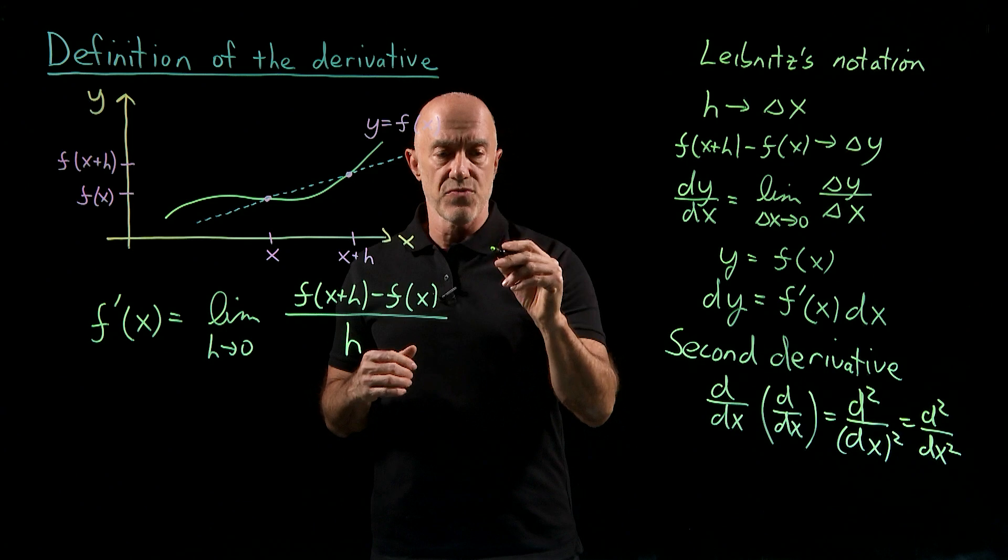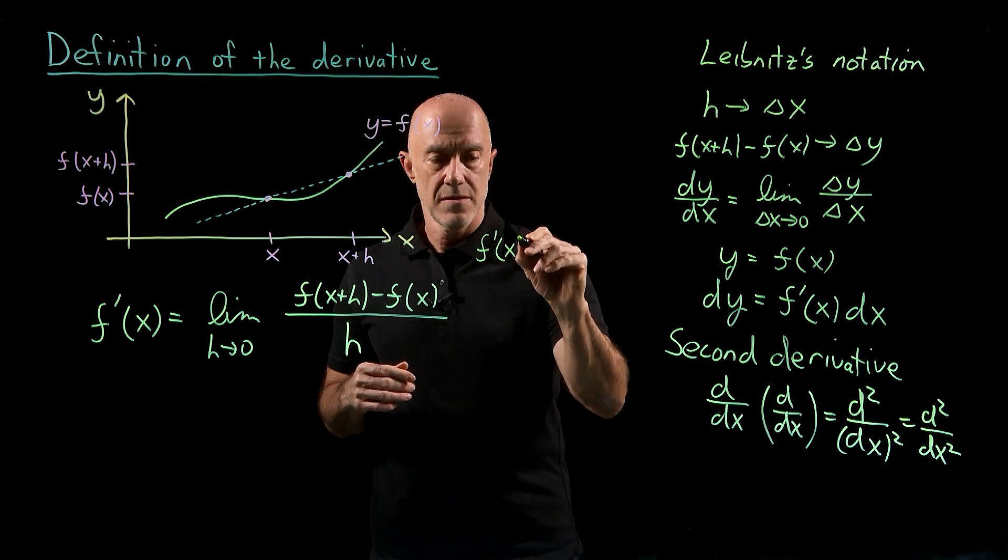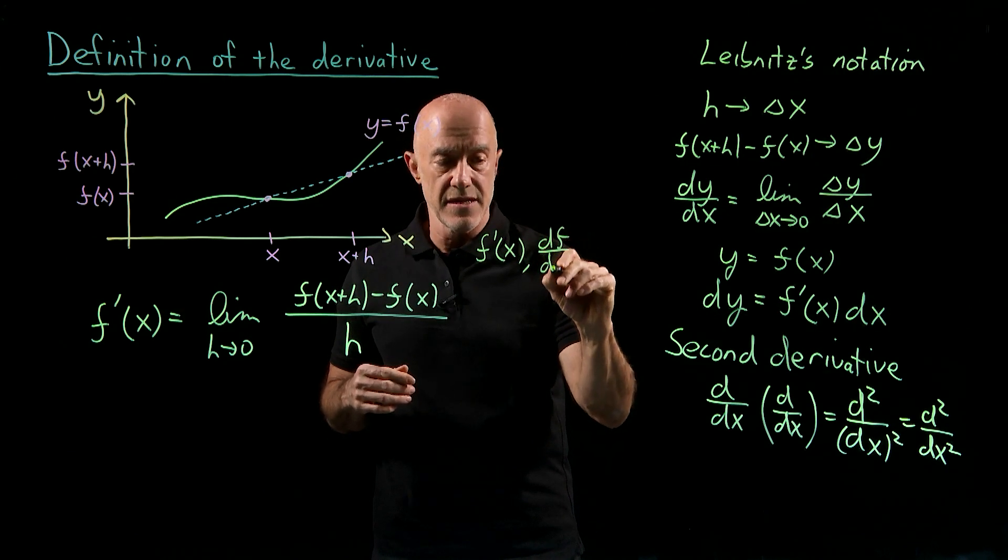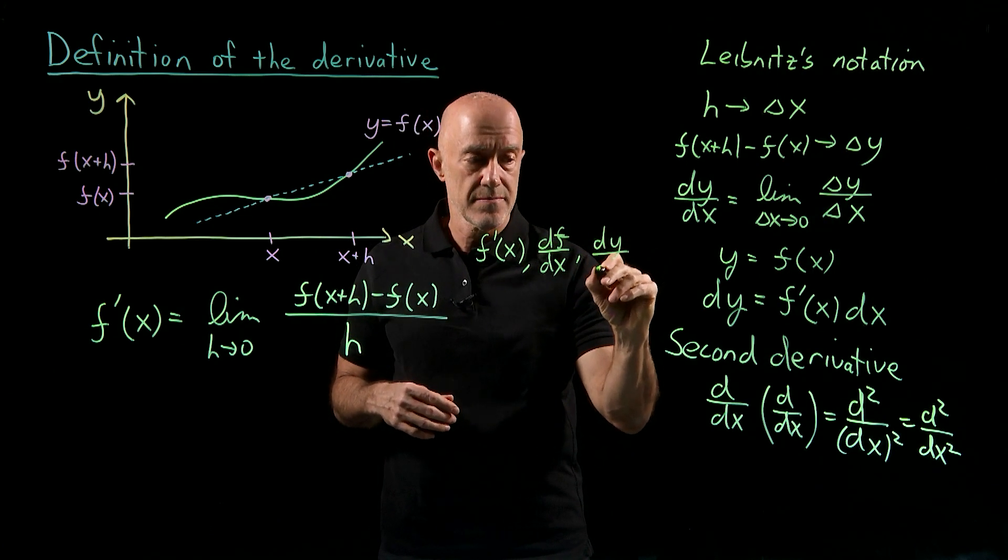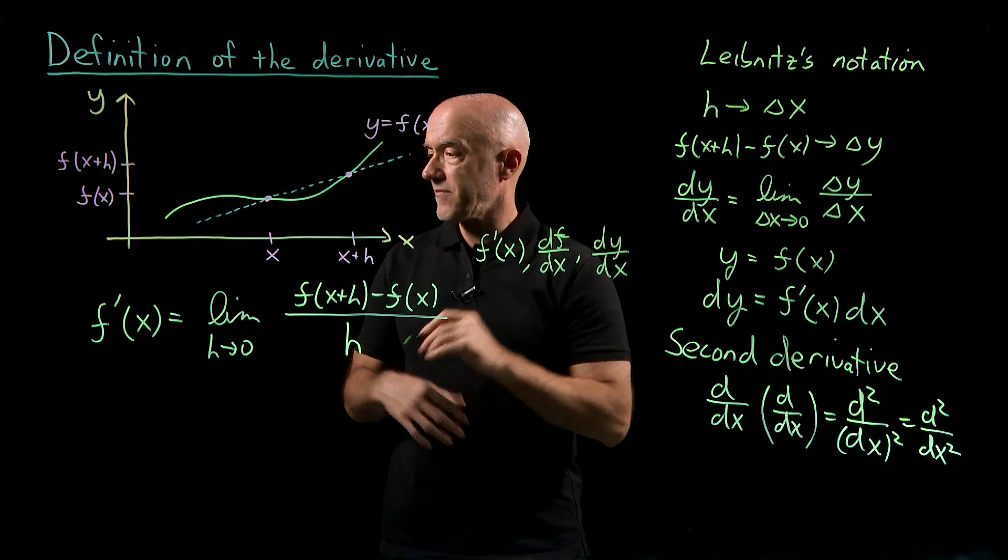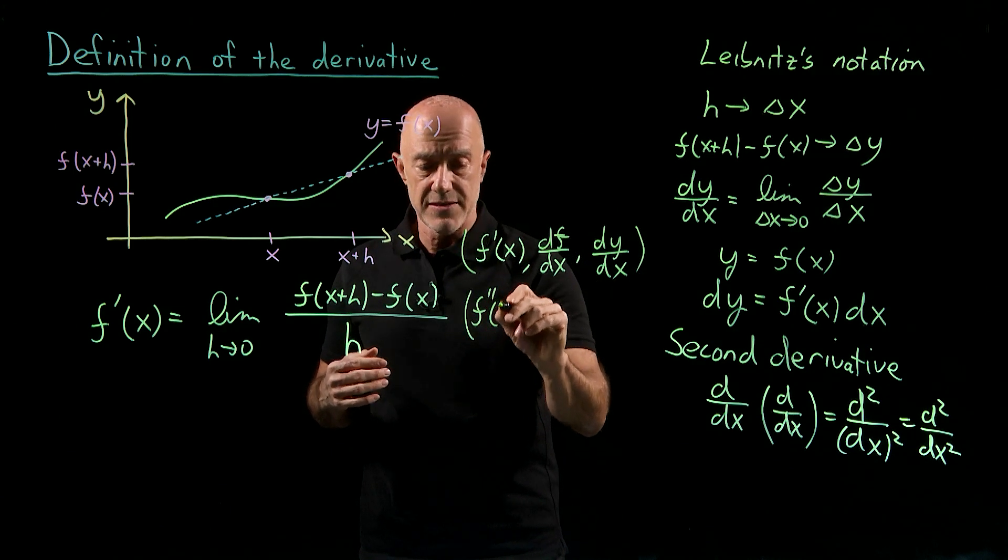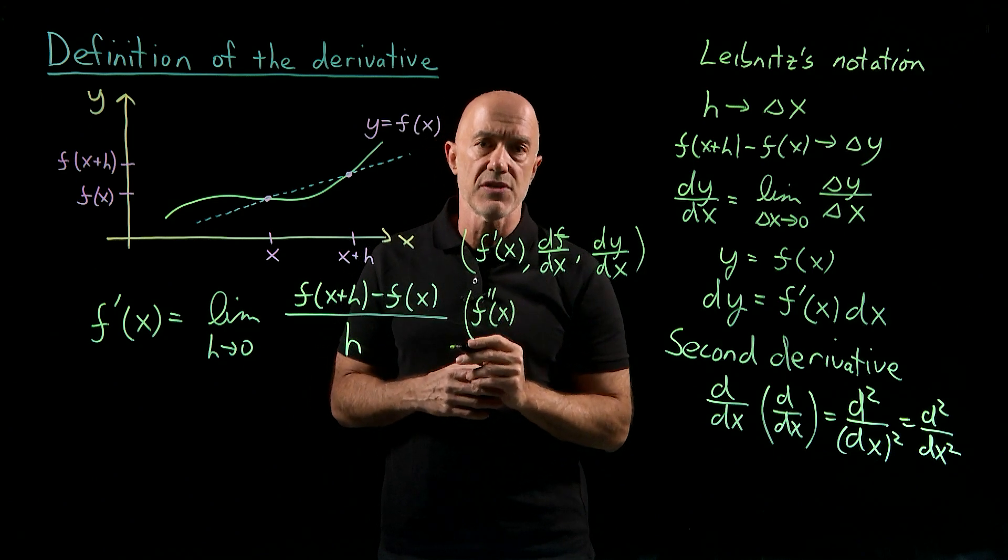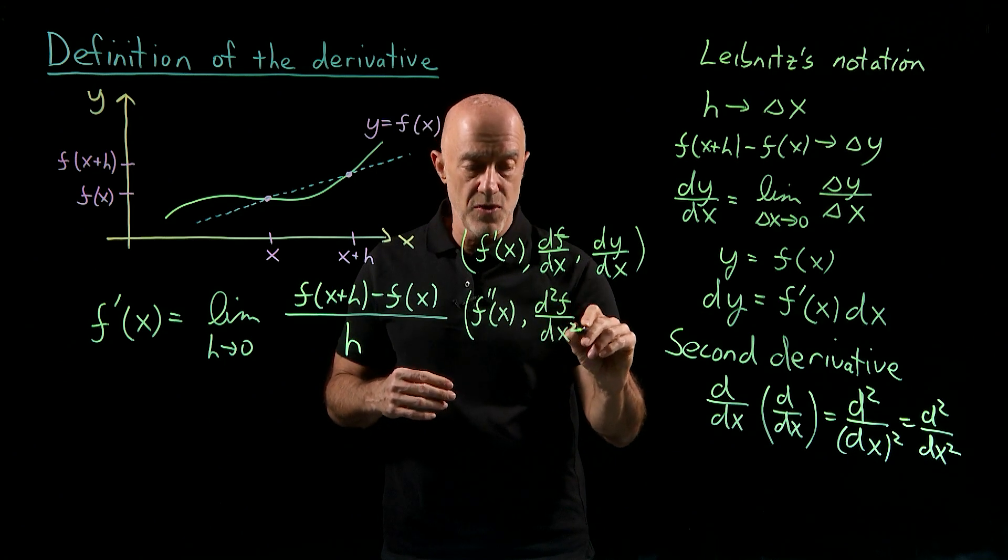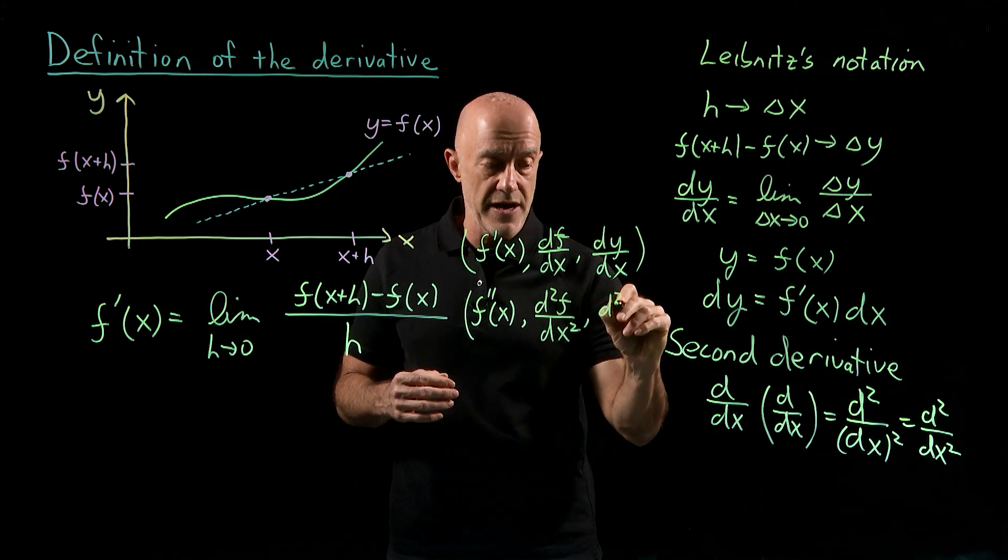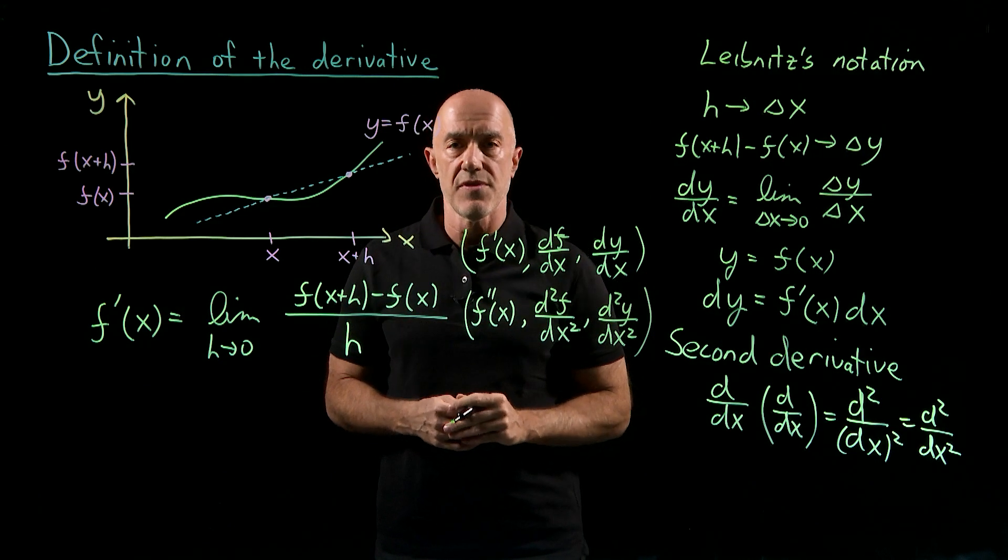So we have first derivatives, we have f prime of x. We can write it as df dx is another notation. For the second derivative, we can write it as f double prime of x, means it takes the second derivative of the function f. We can write it as d squared f dx squared, or we can write it as d squared y dx squared. So these are all common notations for the second derivative.